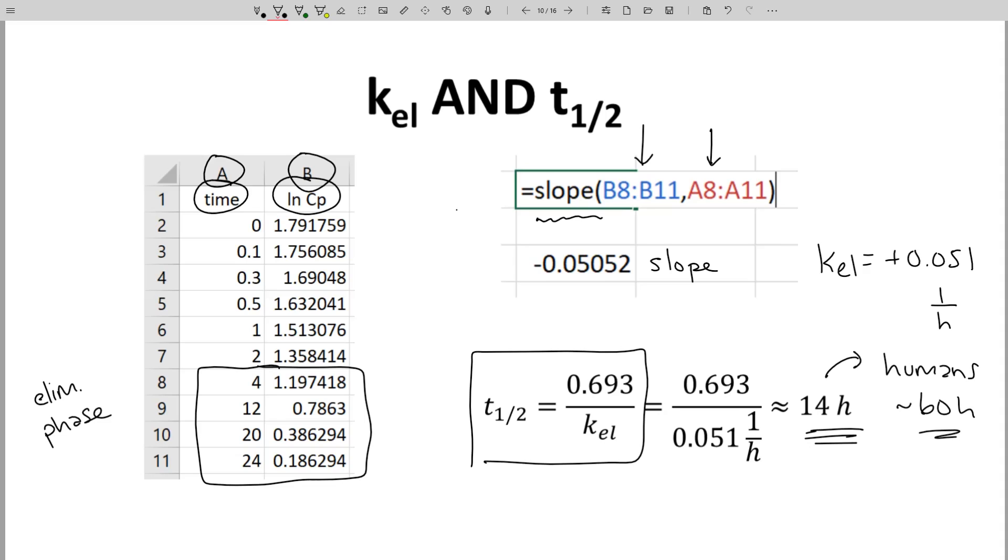As you might imagine, researchers have developed general correlations for other animal species as well, including monkeys and dogs. In general, half-lives increase as animals increase in mass.